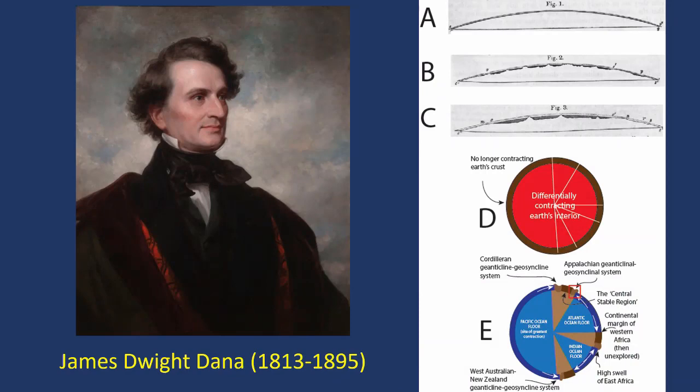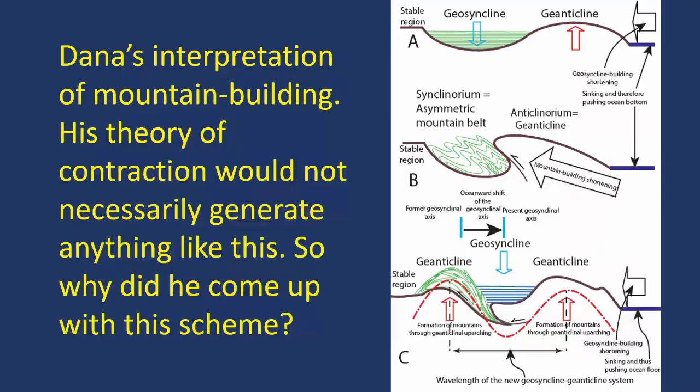In the 19th century, James Dwight Dana, working in the United States, thought — following Élie de Beaumont, and even before that by Descartes — the whole globe was contracting. And as a result, certain areas were shortening, and certain other areas were not. Non-shortening areas he called stable regions. Dana's interpretation of mountain building — his theory of contraction — would not necessarily generate anything like this.